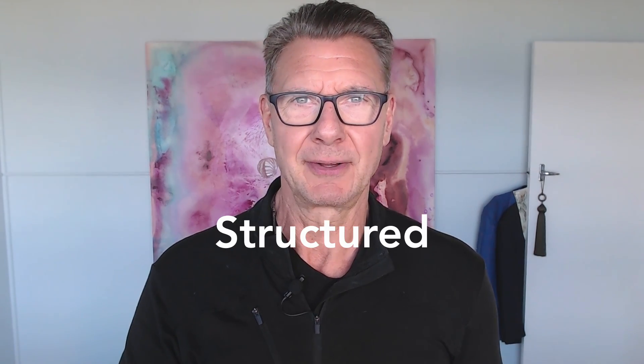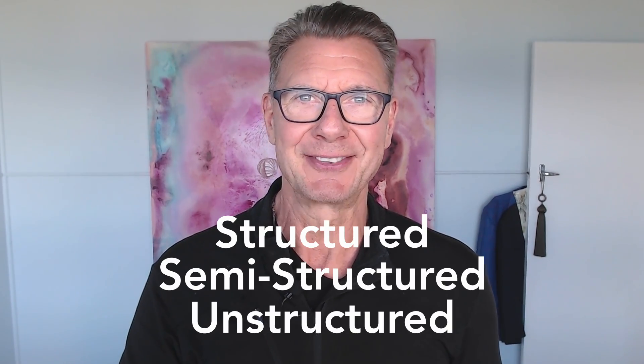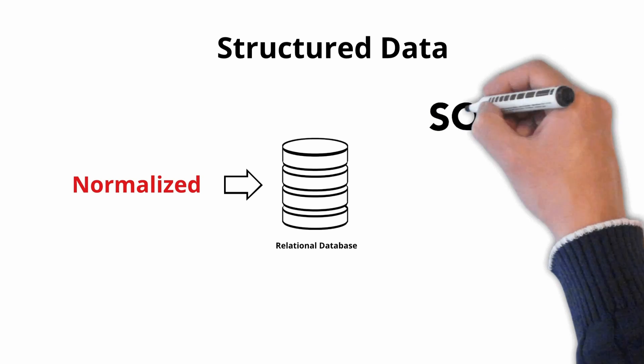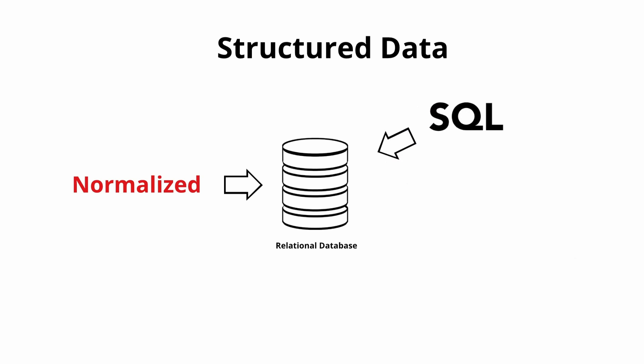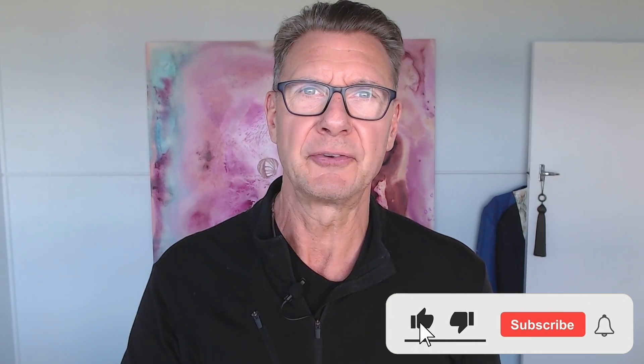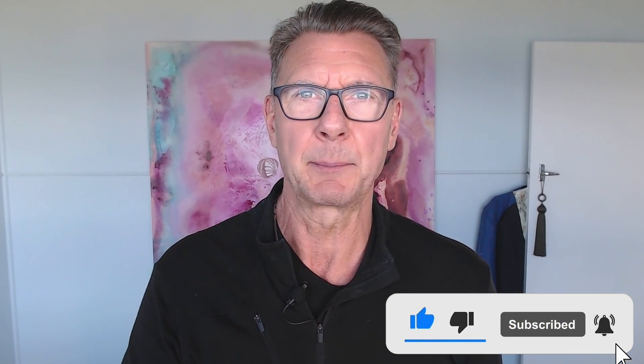Data is typically divided into three categories: structured, semi-structured, and unstructured data. Structured data can be normalized and put into a relational database, then manipulated using SQL, the structured query language. Structured data is easy to retrieve, update, delete, and analyze. Examples include data from a CRM or ERP application such as customer records, product inventory, and financial data.